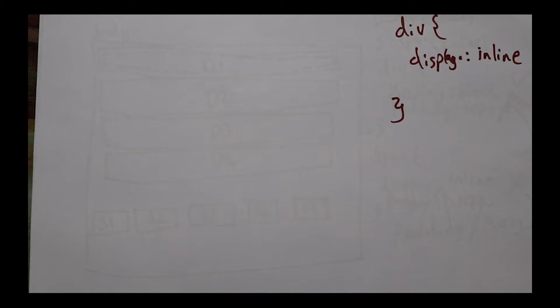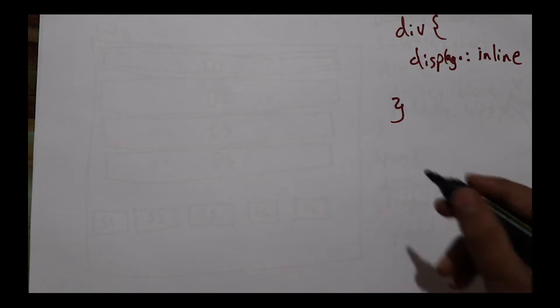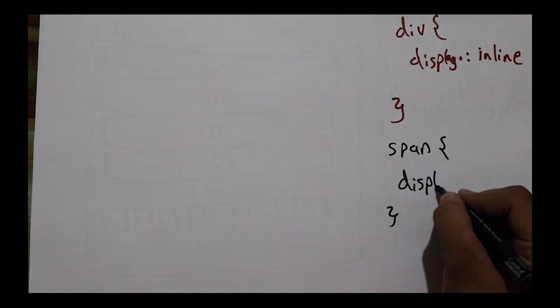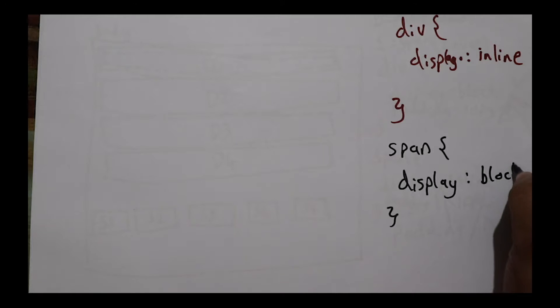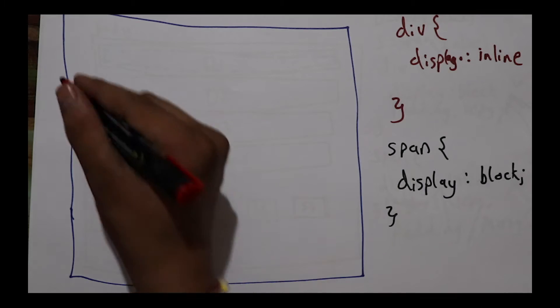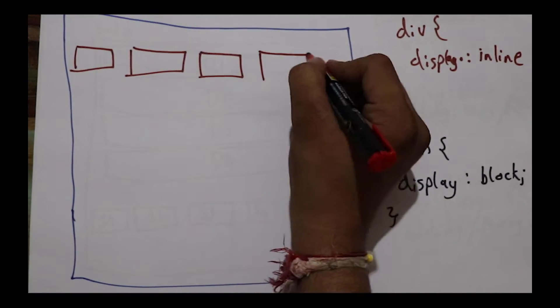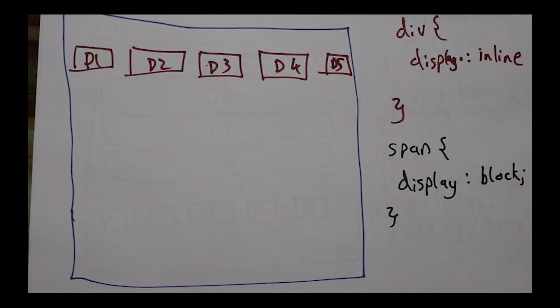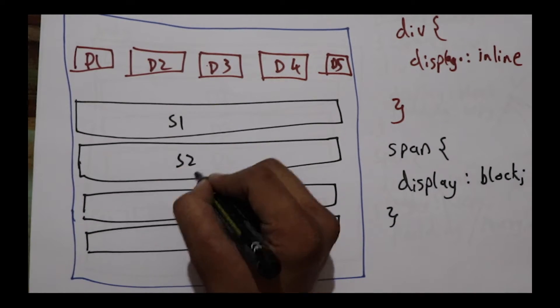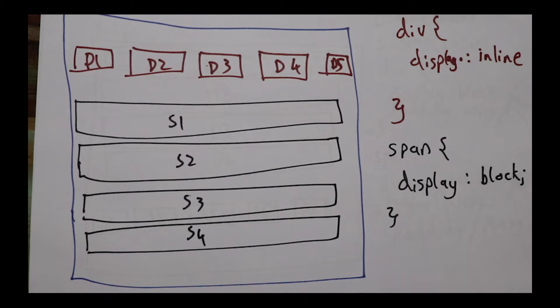So if you set div to display inline and span to display block, things start appearing in the opposite way. The divs would now appear inline and the spans would start occupying the entire space on the page.